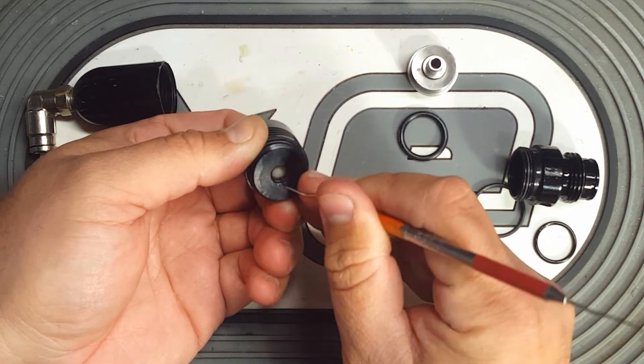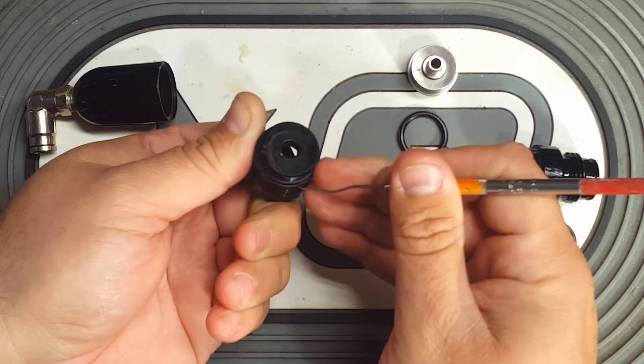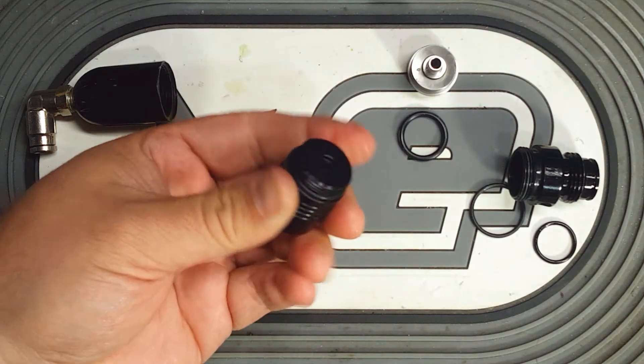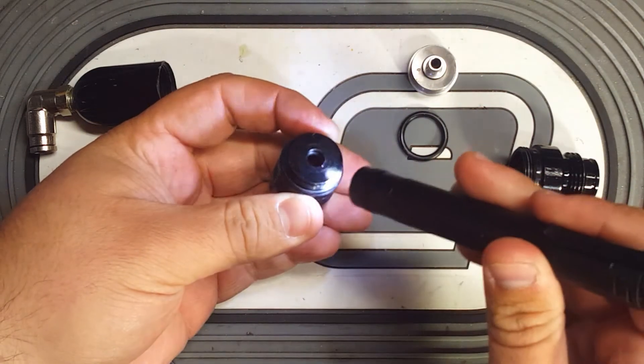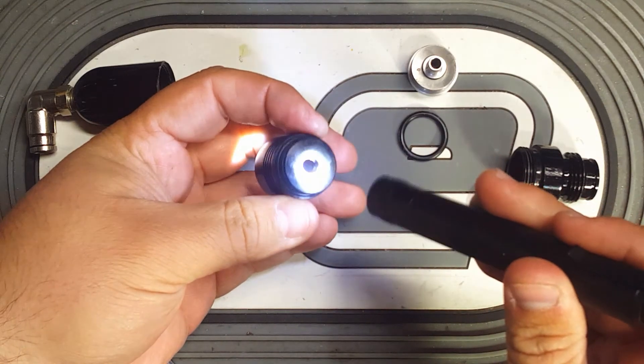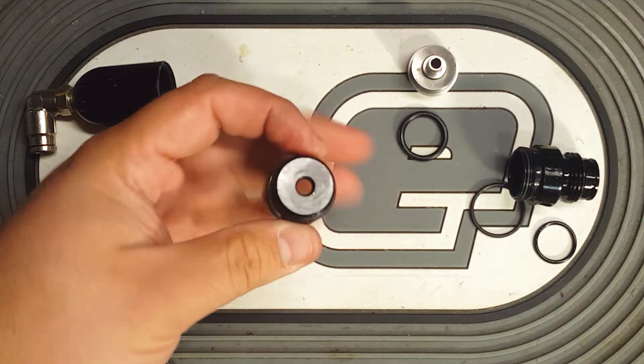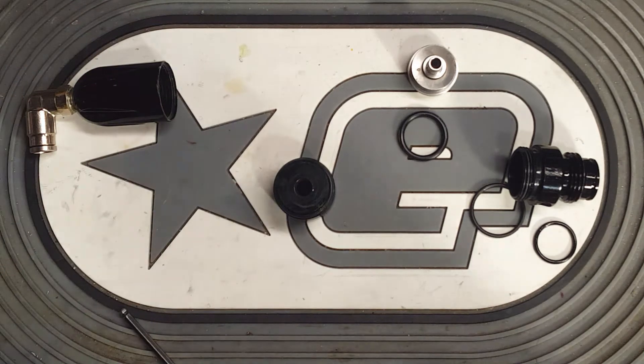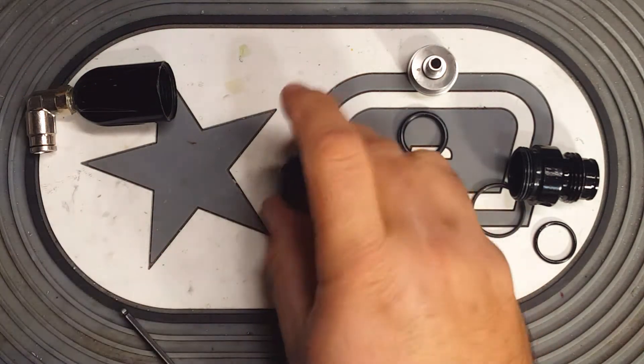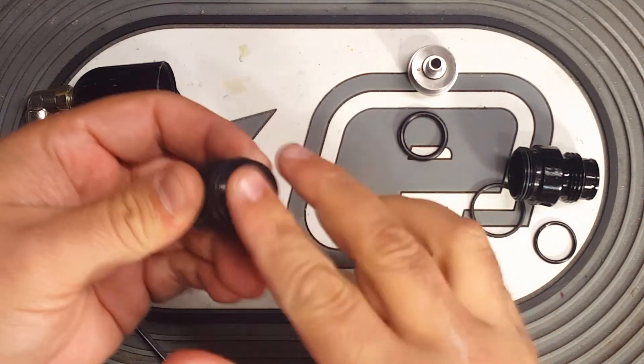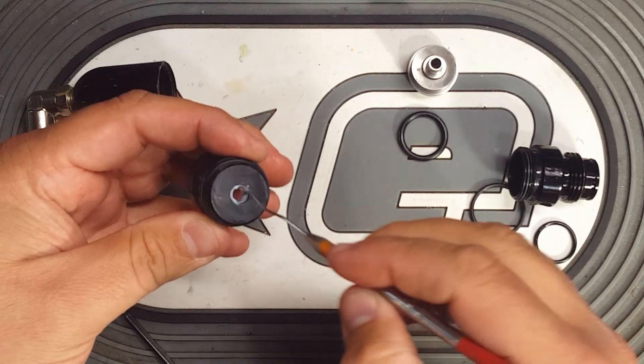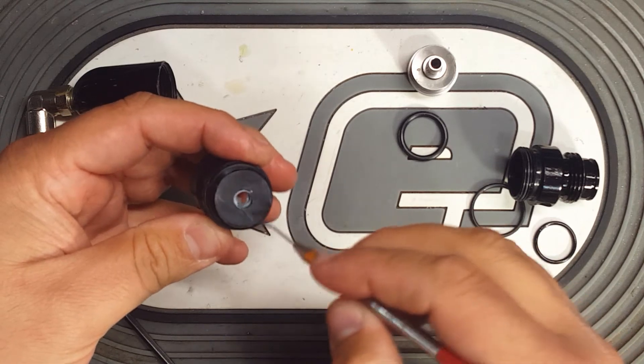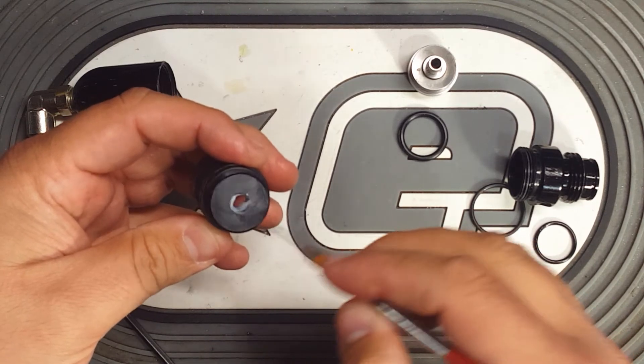And then either use a pick or an Allen wrench or something to push it in the rest of the way. Make sure that it's seated fully inside that groove right here. Now I'm going to put some grease on that number 10. The easiest way to do is just rub it around inside the small opening. Use a pick or an Allen key or something to wipe it around the edge onto the seal itself.